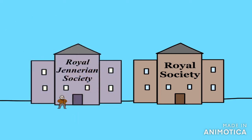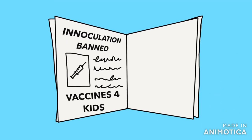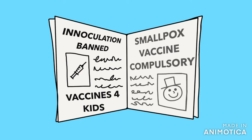In 1802 the Royal Jennerian Society was set up to promote vaccines, and by 1804 it had vaccinated 12,000 people, but it took time to get popular in Britain because of opposition. Eventually, after a smallpox epidemic killed 35,000 in 1837–40, the government banned inoculation. From 1840 they agreed to pay for vaccinations for children. In 1852 the government made the smallpox vaccination compulsory, but only enforced it from 1872.